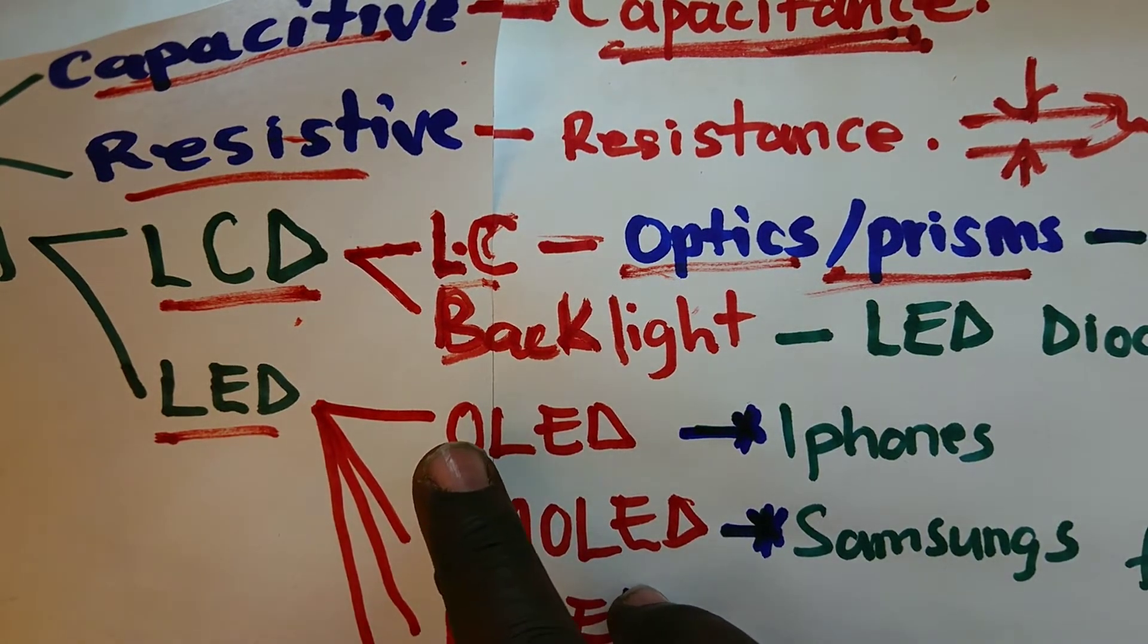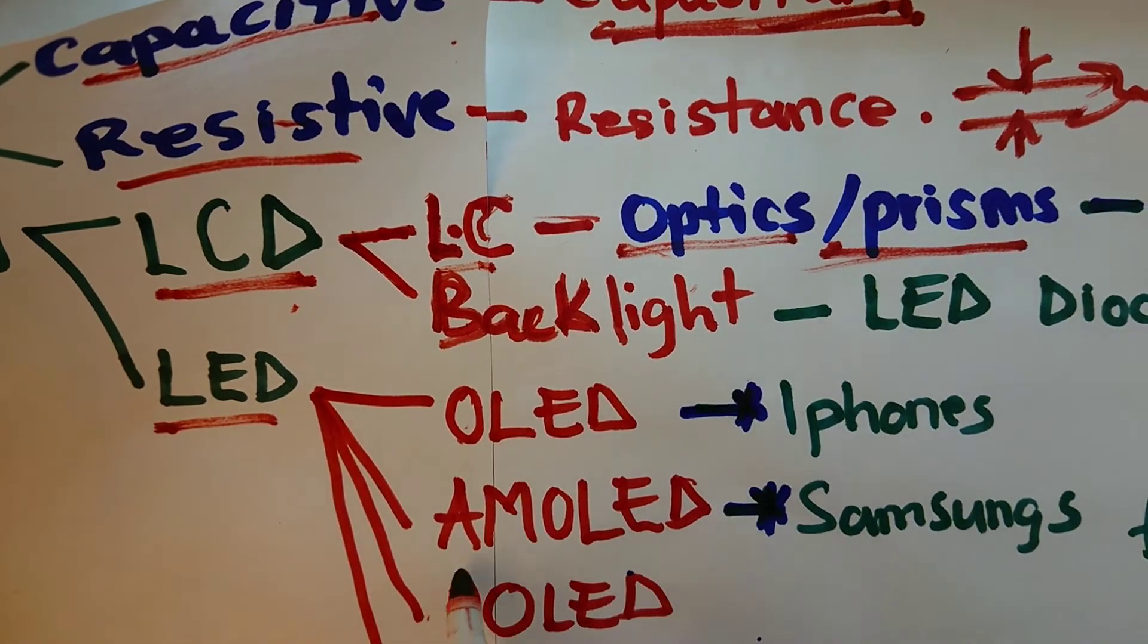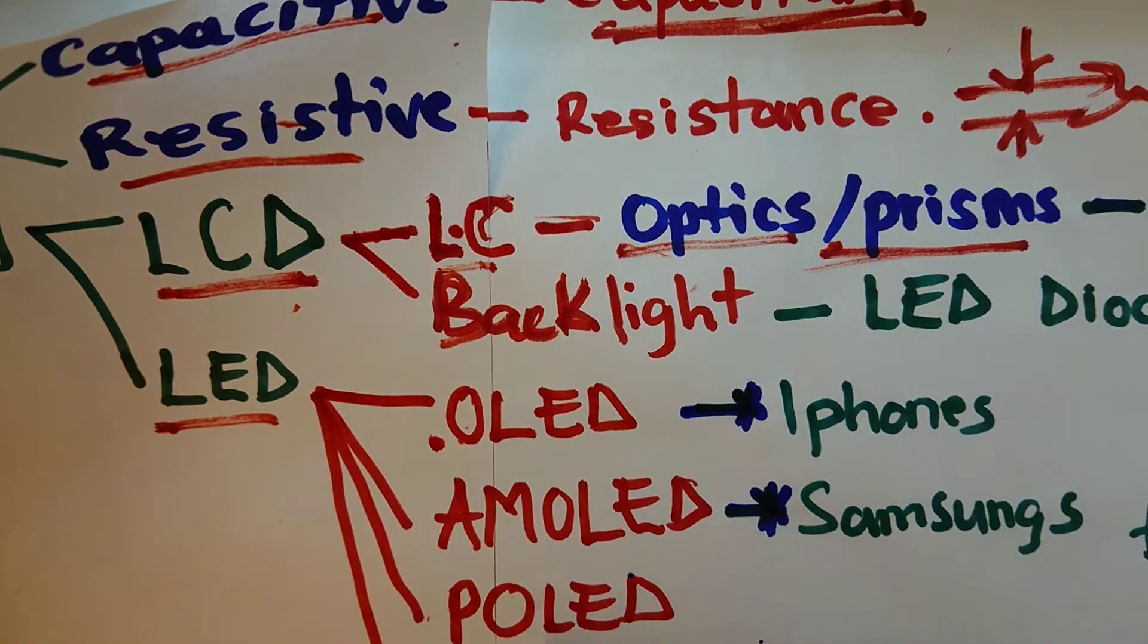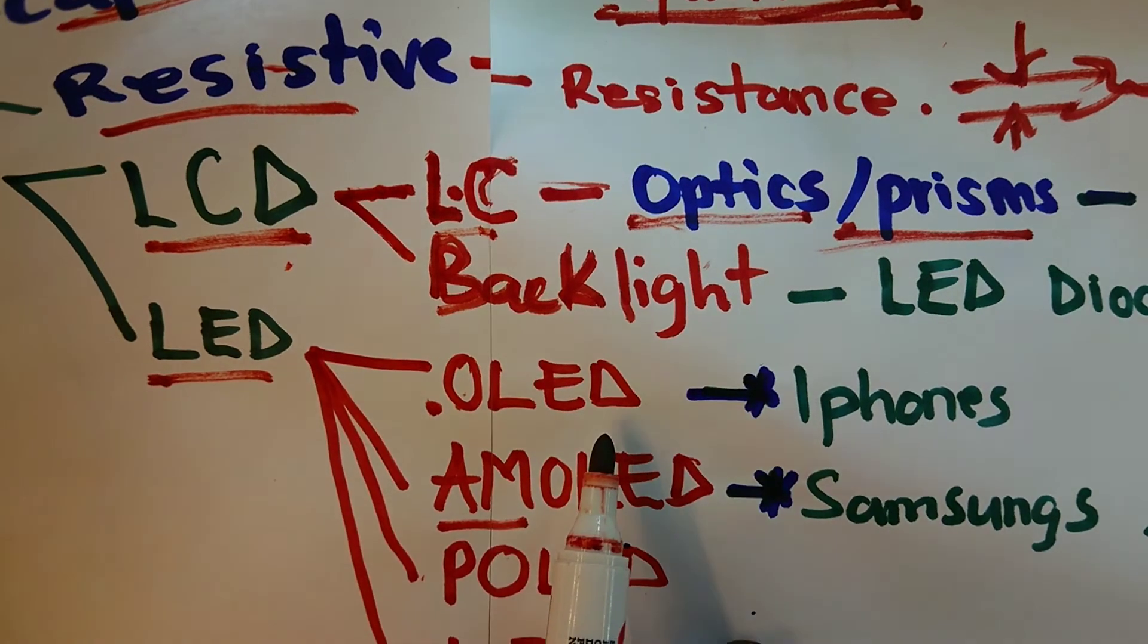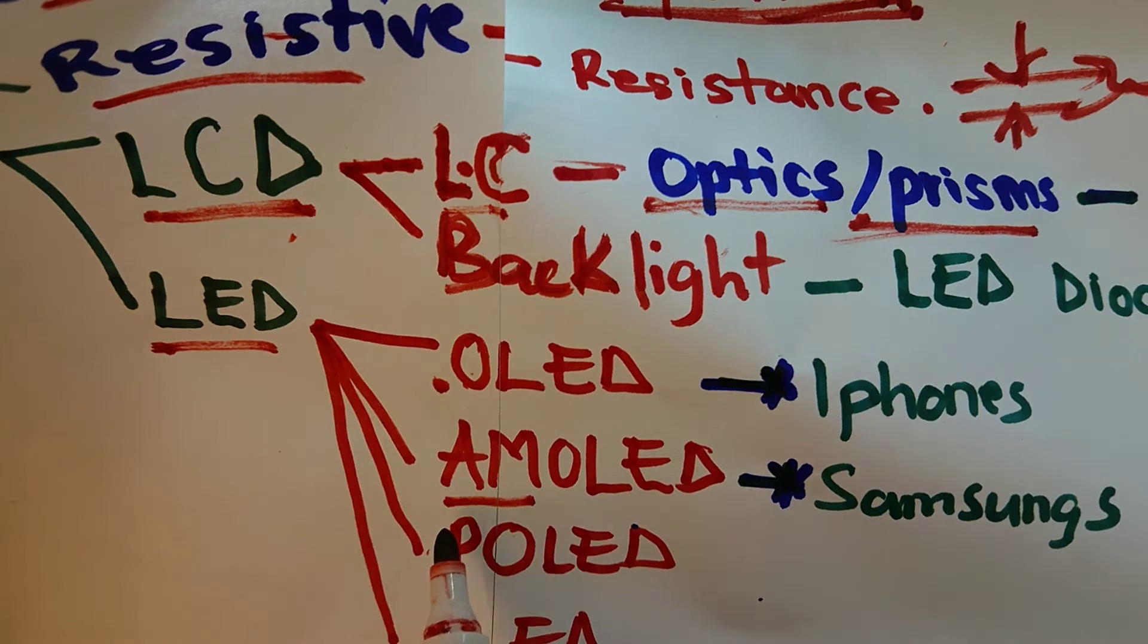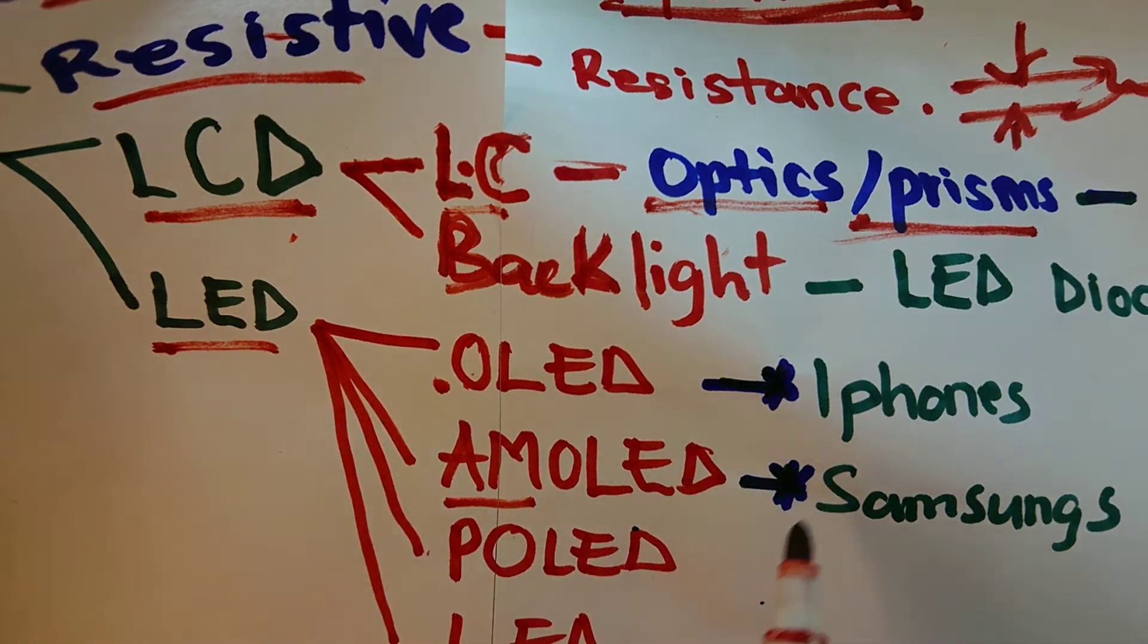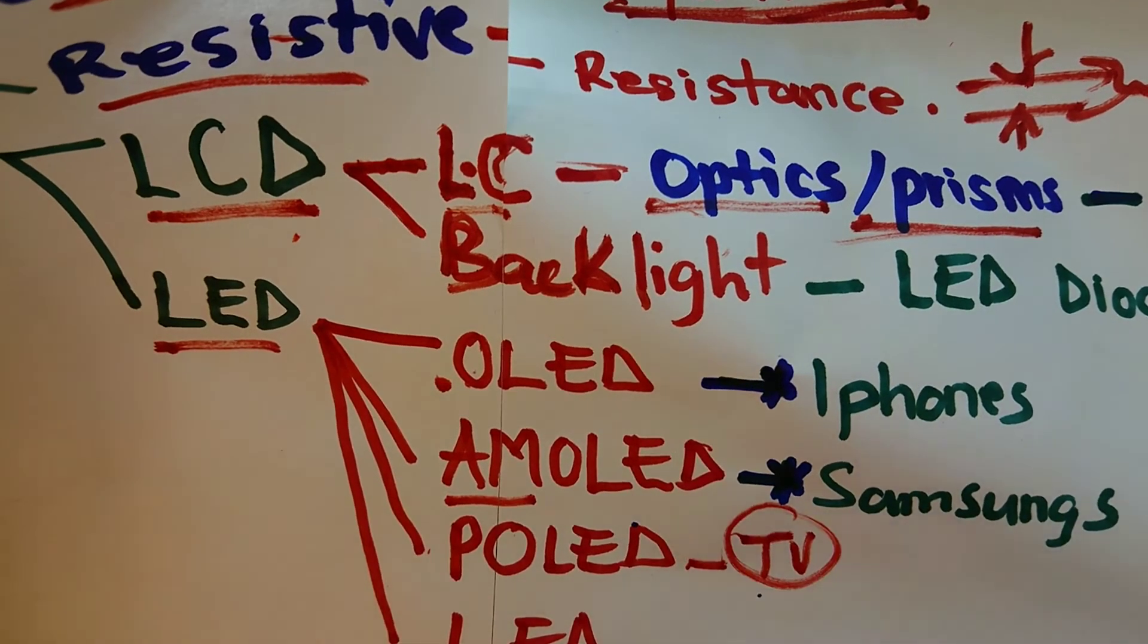the material used is organic in nature. And then we have the AMOLED. Now AMOLED is simply a variant of the OLED and in full it's the active matrix organic light emitting diode. Definitely it goes without saying that we also have the passive organic light emitting diode, but this is normally common to TVs, those so-called OLED TVs.